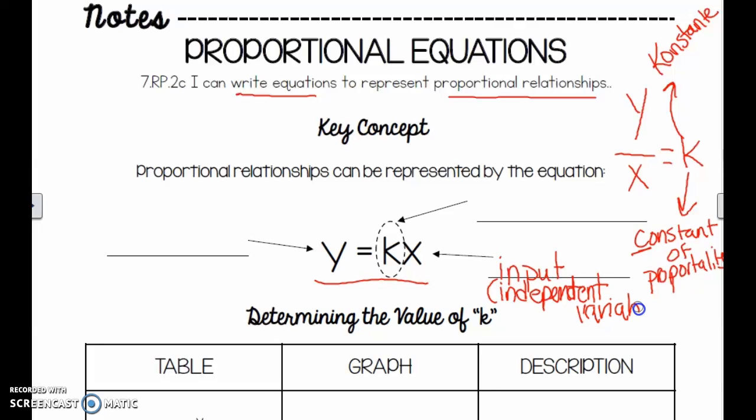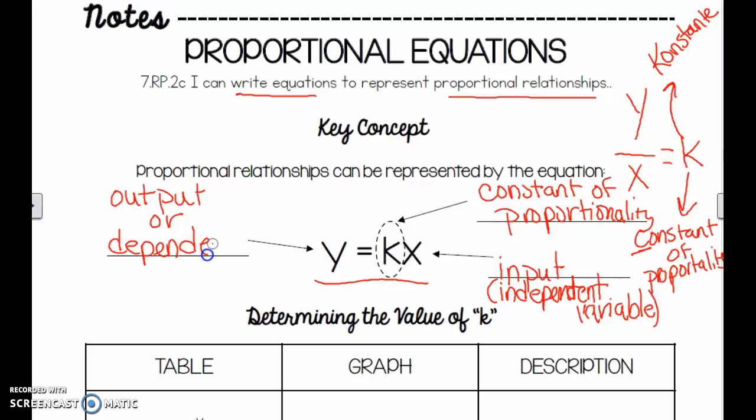The k is the constant of proportionality. And the y is the output or dependent variable. You're going to learn about this a lot next year, so make sure you're paying attention this year. Dependent. Did I spell that correctly? Dependent. I guess it's an 'e'. Oh my goodness, excuse me. All right, I'm going to scroll down.